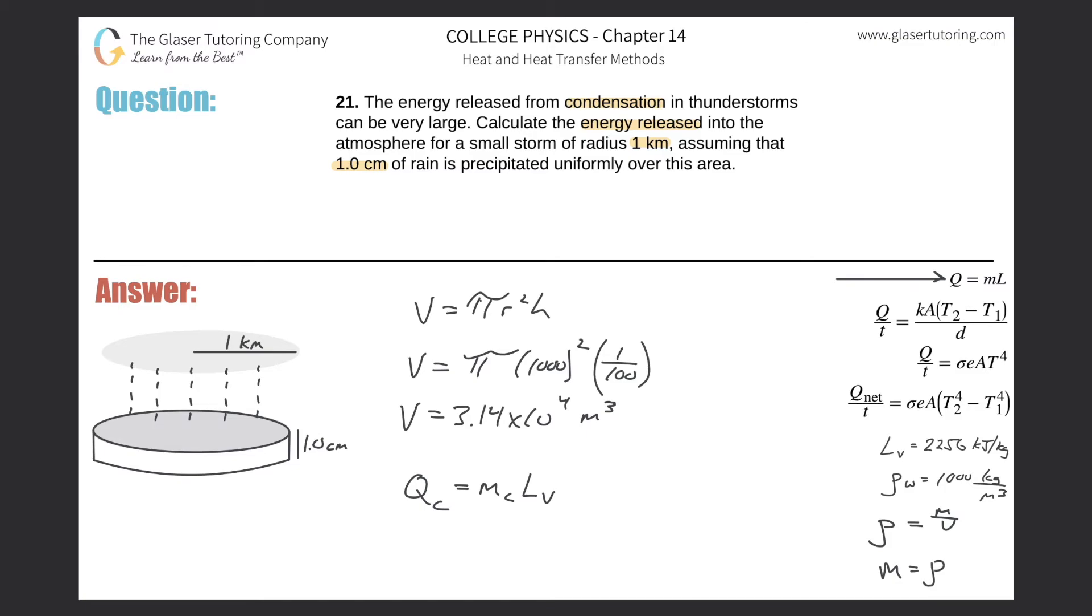Notice how I can now take this and substitute it in for my mass. Now I basically have everything I need. Let's take a step back and write it down. We have the density of water - that's a constant you're supposed to look up or memorize - multiplied by the volume of water that we just found.